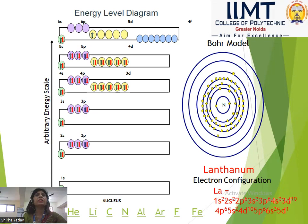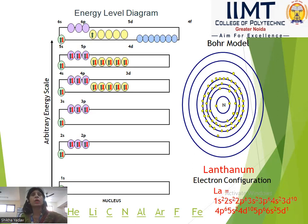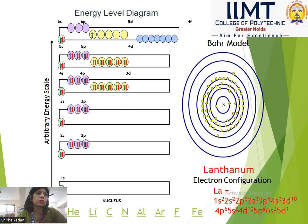This is how we fill the electronic configuration by following some rules. The three major rules are the Pauli Exclusion Principle, Hund's Rule, and the Aufbau Principle. Without using these rules, you cannot know how to fill the electrons in each subshell, how many electrons will go in each orbital, subshell, or energy level. These three rules tell us how the distribution of electrons in different orbitals takes place.